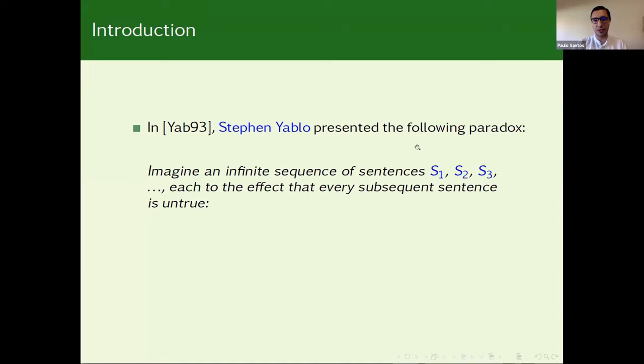So imagine an infinite sequence of sentences, S1, S2, and so on, each to the effect that every subsequent sentence isn't true. More precisely in this one, S1 claims that for all k greater than 1, S(k) isn't true. S2 claims the same, but now we replace here the 1 by 2, and so on and so forth.